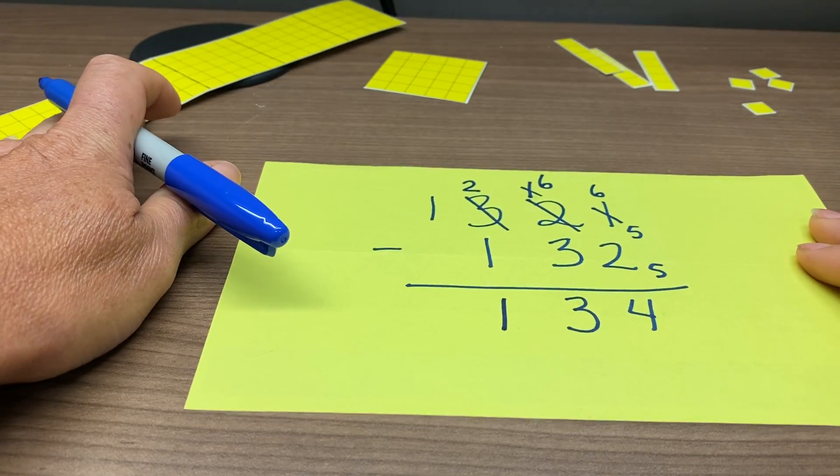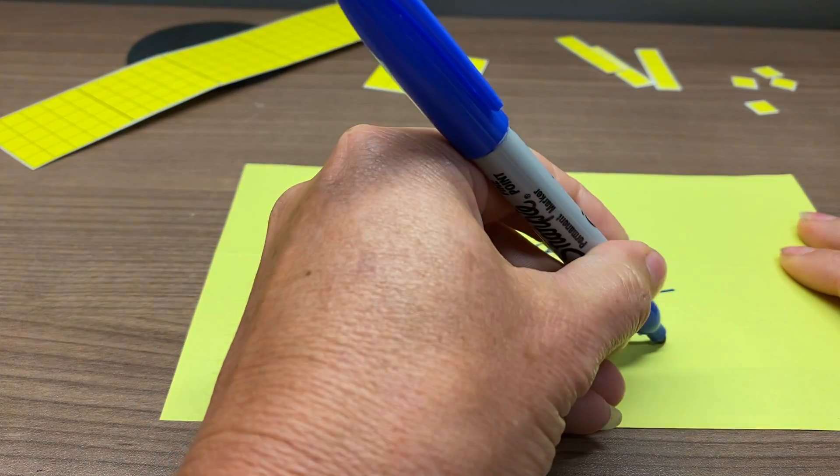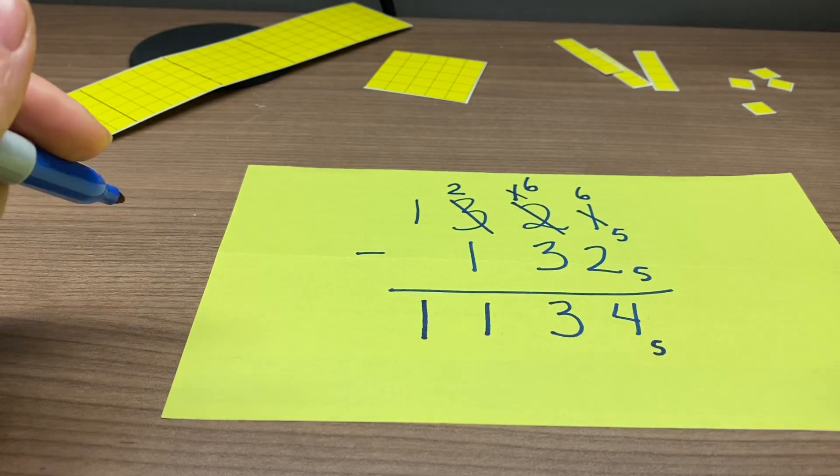And we're not changing this place value at all, none being taken away from there, so we just record that it is still there. And there is our final answer, 1, 1, 3, 4, in base 5.